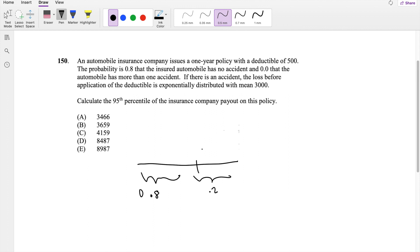If there is an accident, so if it's on this side, the loss before application of the deductible is exponentially distributed with a mean of 3,000. So mean of 3,000.